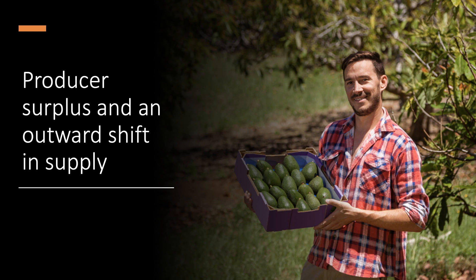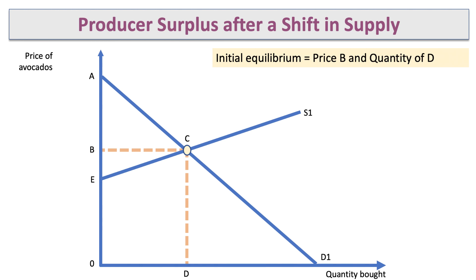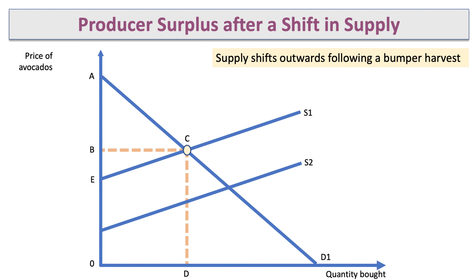What about an outward shift in supply? Let's take the producer of avocados, who is initially selling a quantity D at price B when the market is in equilibrium at point C. So the initial producer surplus — with price B and quantity D — is area BCE.